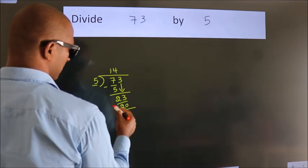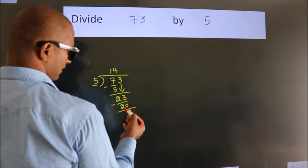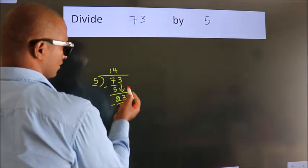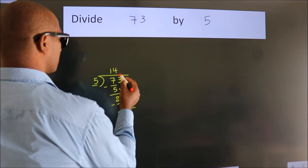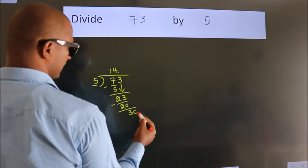Now we subtract. We get 3. After this, no more numbers to bring down. So what we do is, we put a dot and take 0.